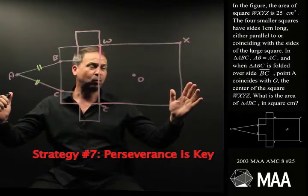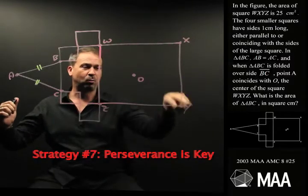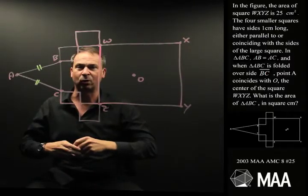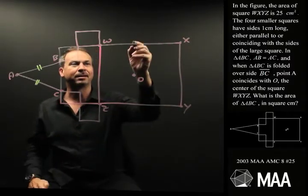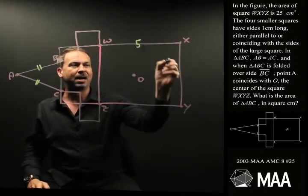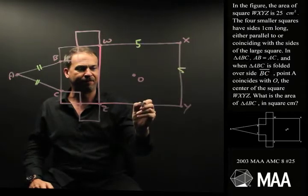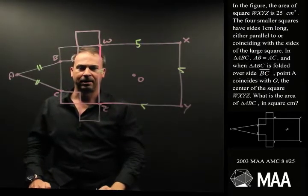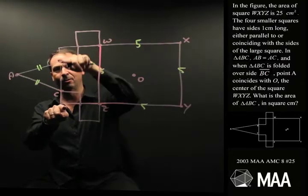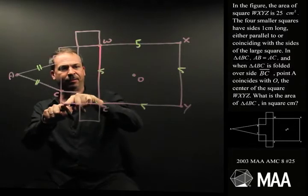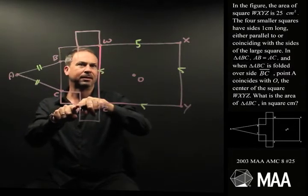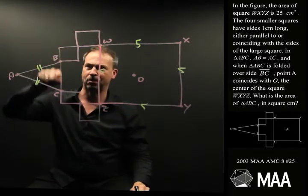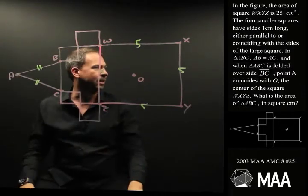So the big square WXYZ has area 25 centimetres squared. That means its side length must be five. So let me write five, five, five, five, and five. I guess that means this is also five. It's a bit complicated, I'll leave that for the moment.